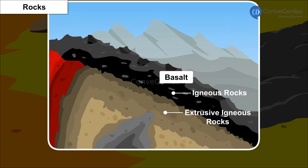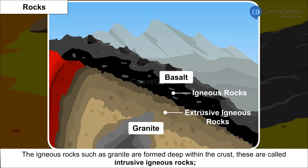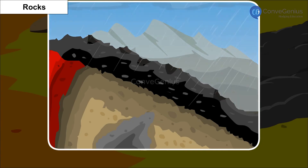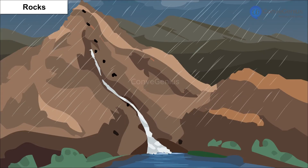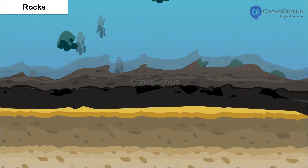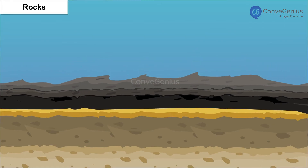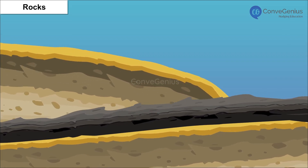Extrusive igneous rocks are smooth in texture. When igneous rocks such as granite are formed deep within the crust, these are called intrusive igneous rocks, which are usually granular. When igneous rocks crack or fall against each other, they form sediments that are moved by air or water over a period of time.